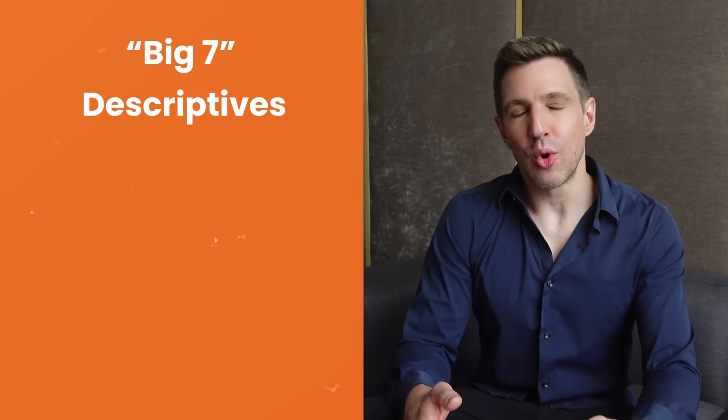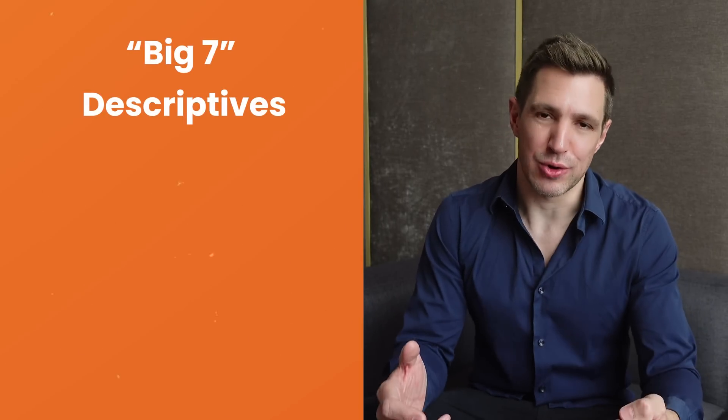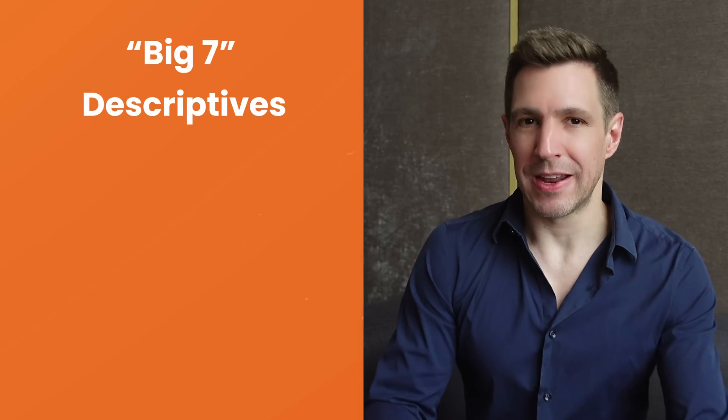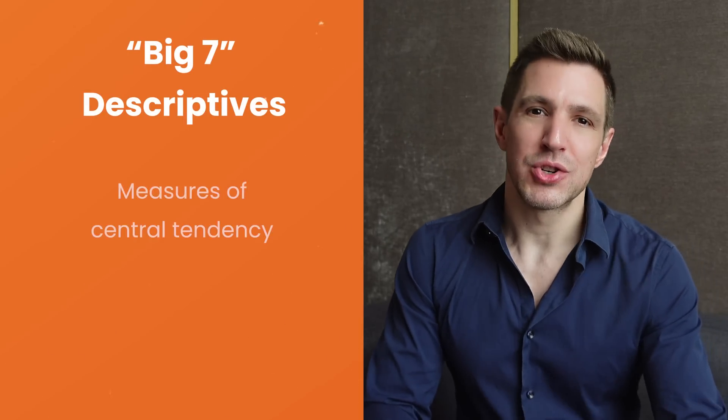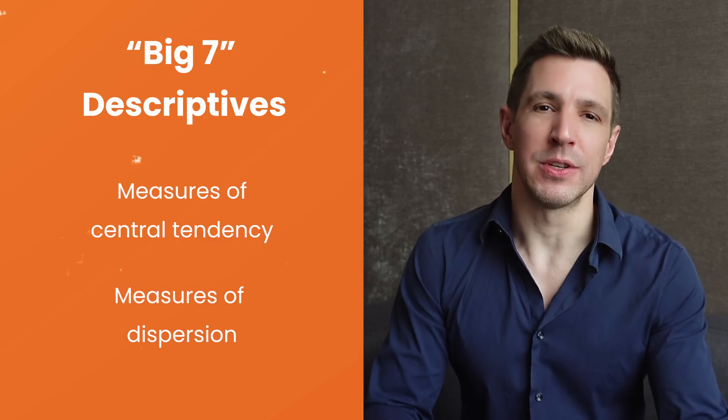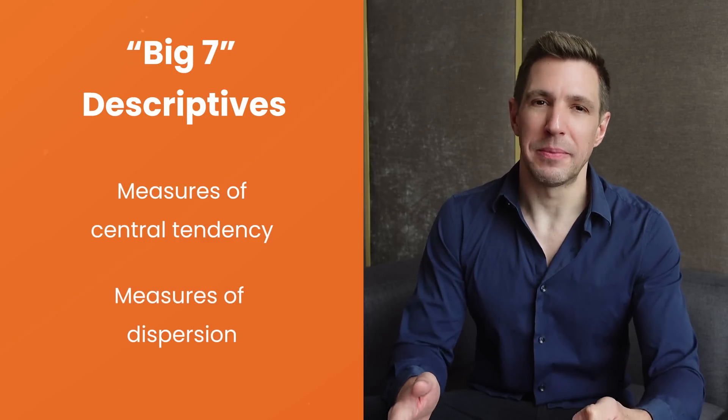With the what and the why out of the way, let's take a look at the most common descriptive statistics. Beyond the basic counts, proportions, and percentages mentioned earlier, we have what we call the big seven descriptives. These can be divided into two categories: measures of central tendency and measures of dispersion.